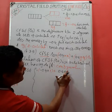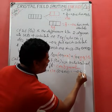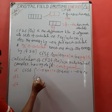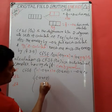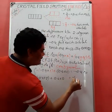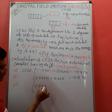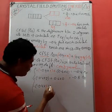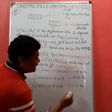For d2 configuration, the second electron also fills in t2g, giving minus 0.4 multiplied by 2, plus 0.6 multiplied by zero, so the CFSE is minus 0.8 delta-oh. For d3 configuration, all three electrons fill in t2g, giving minus 0.4 multiplied by 3, plus 0.6 multiplied by zero, so the CFSE is minus 1.2 delta-oh.